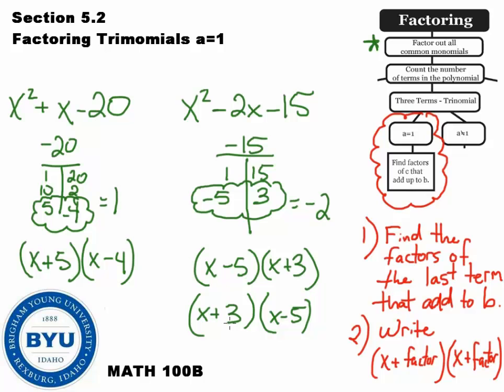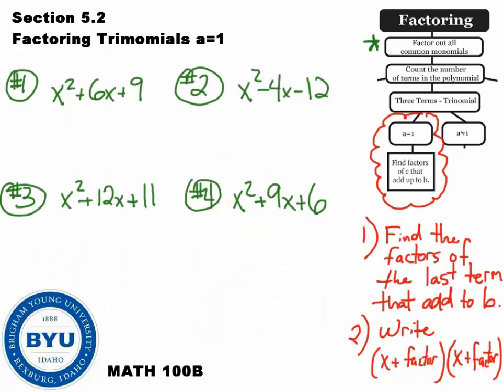That's really all there is to it. Find the factors of c that add up to b. Let's give you some practice problems. Here are 4 questions to try. Go ahead and pause the video now and work on factoring these — take the factors of c, find all the factors, and determine which pair adds up to the middle term. Push play when you're ready to resume.